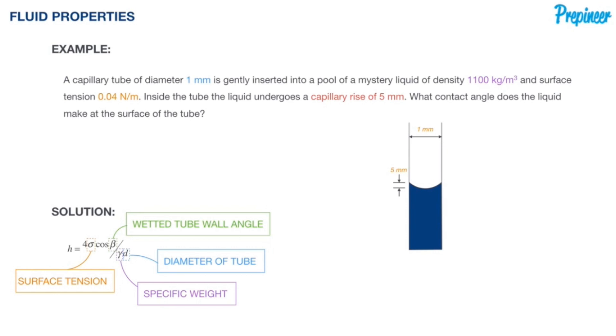These are the characteristics of this particular equation. We are given the density, not the specific weight but we are given the density. We're given a capillary rise h of 5 millimeters, a surface tension, and a diameter. I've already converted that diameter from millimeters into meters, which is a very important step that you can't fail to do, as well as converting the capillary rise.